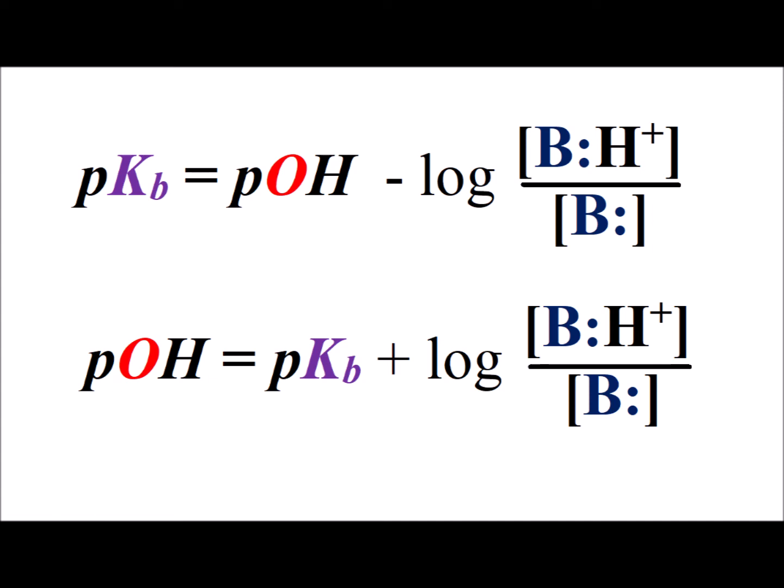Now we add the logarithm of the concentration of protonated B divided by the concentration of the unprotonated B to each side to get an expression where we have pOH on the left-hand side and an expression on the right-hand side that looks very familiar to the classical Henderson-Hasselbalch equation.